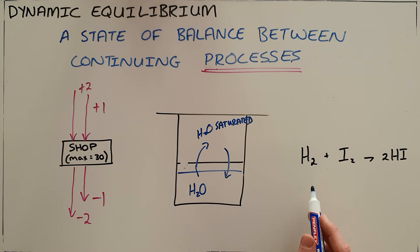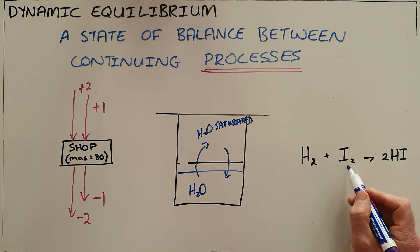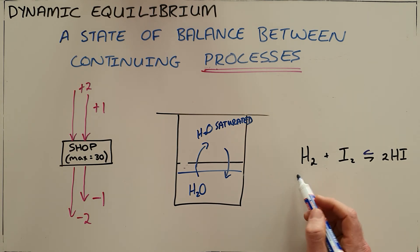We also learn that reactions are reversible. This reaction shows hydrogen and iodine reacting to form hydrogen iodide. But we know the reverse reaction is possible too, which means that hydrogen iodide would then react again to form hydrogen and iodine.